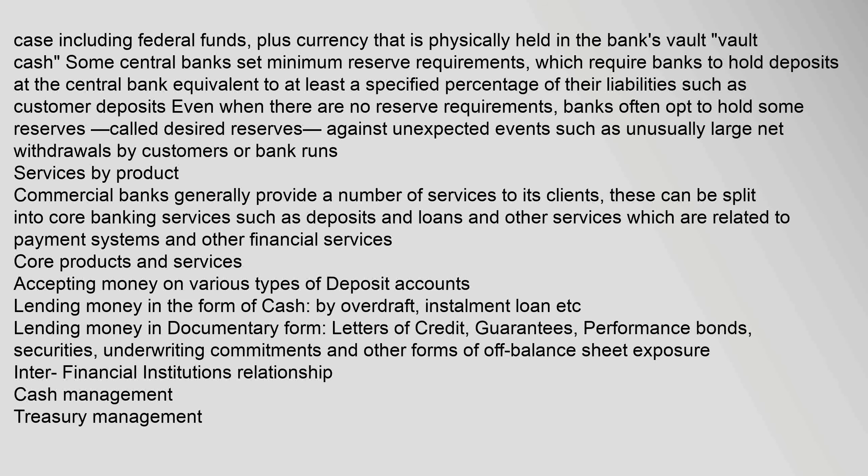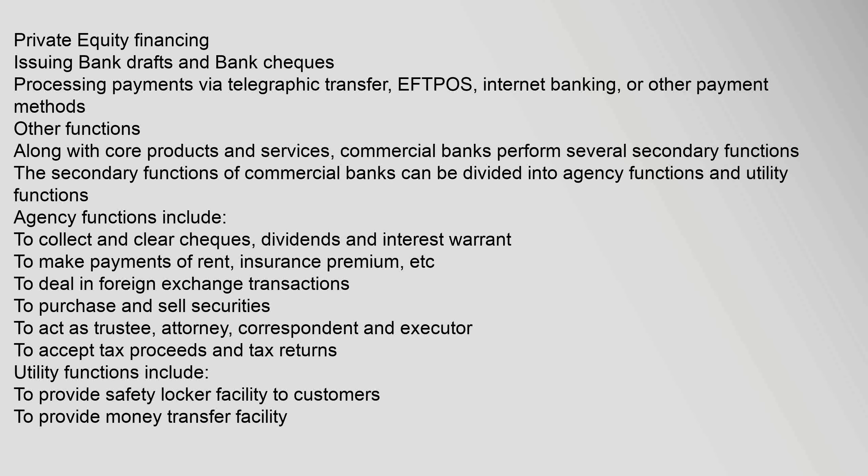Commercial banks generally provide a number of services to their clients. These can be split into core banking services such as deposits and loans, and other services related to payment systems and financial services. Core products and services include: accepting money on various types of deposit accounts; lending money in the form of cash, by overdraft, installment loan, etc.; lending money in documentary form such as letters of credit, guarantees, performance bonds, securities, and underwriting commitments; inter-financial institution relationships; cash management; treasury management; private equity financing; issuing bank drafts and checks; and processing payments via telegraphic transfer, EFTPOS, internet banking, or other payment methods.